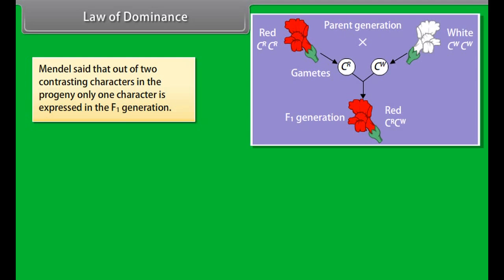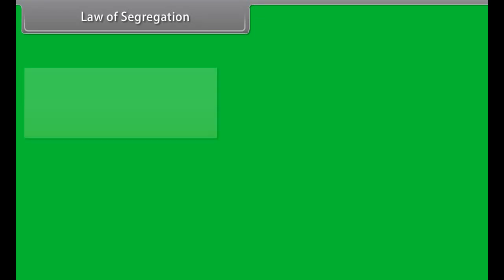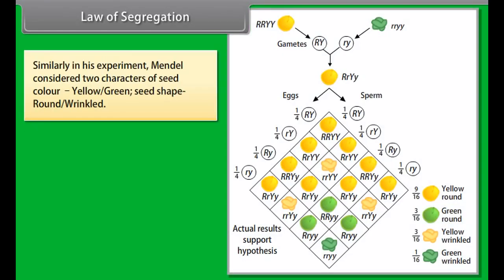In the first generation, all the plants were tall — there were no halfway characteristics. In the second generation, both traits are expressed in the progeny in the ratio three to one. Based on these experiments, Mendel proposed two laws: the law of dominance and the law of segregation.